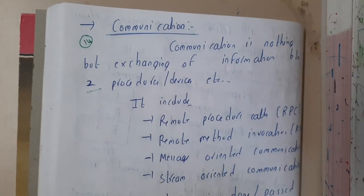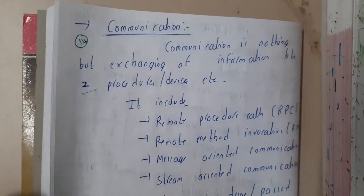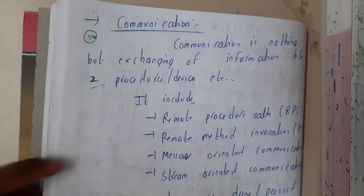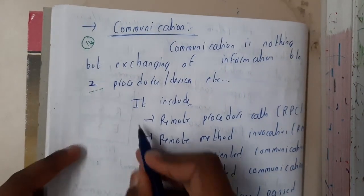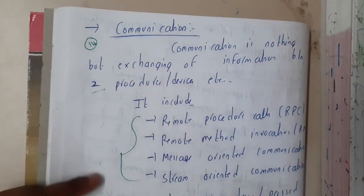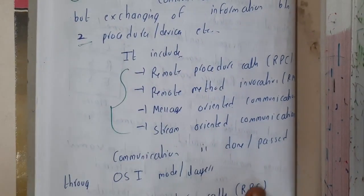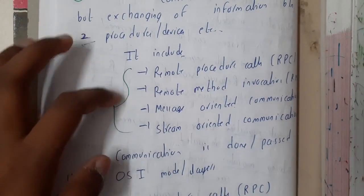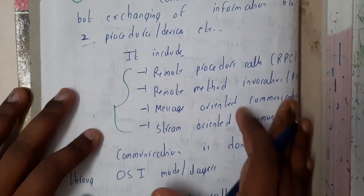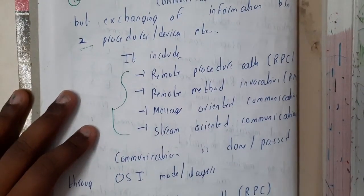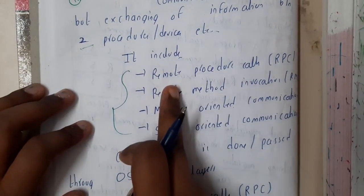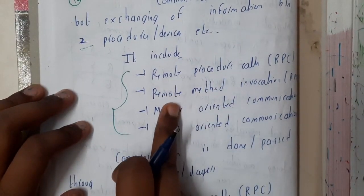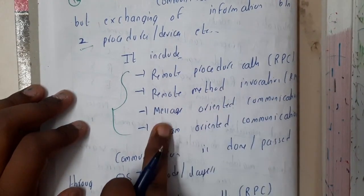Here, instead of humans, we are replacing them with procedures or devices, as we are talking in terms of distributed systems. There are four different methods of communication, and I will be discussing each one in detail in the next lectures. The first one is Remote Procedure Call, and the second type is Remote Method Invocation.